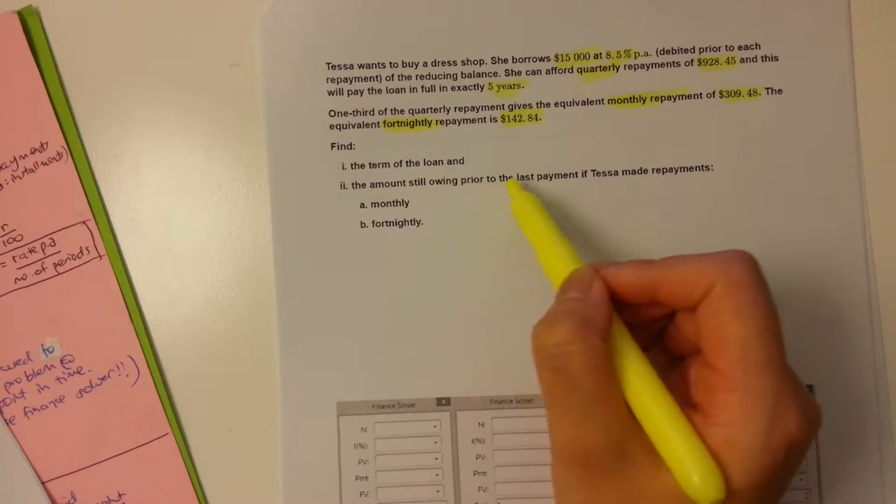Now, once we hit Enter, we find that our future value, or the amount we still owe, is $120.64, rounded to the nearest cent. Okay? And that's that example there.